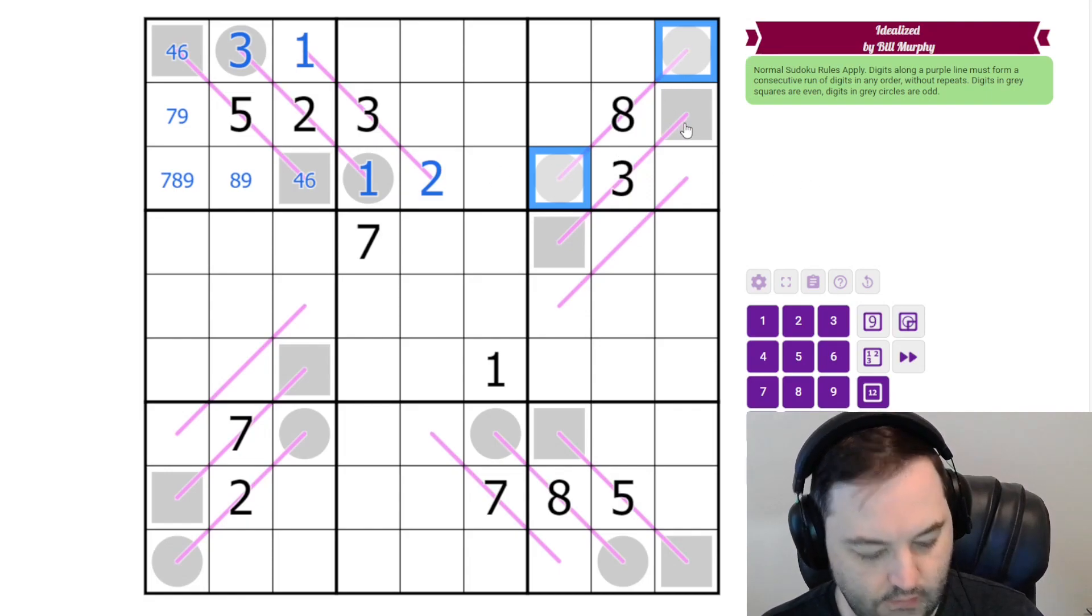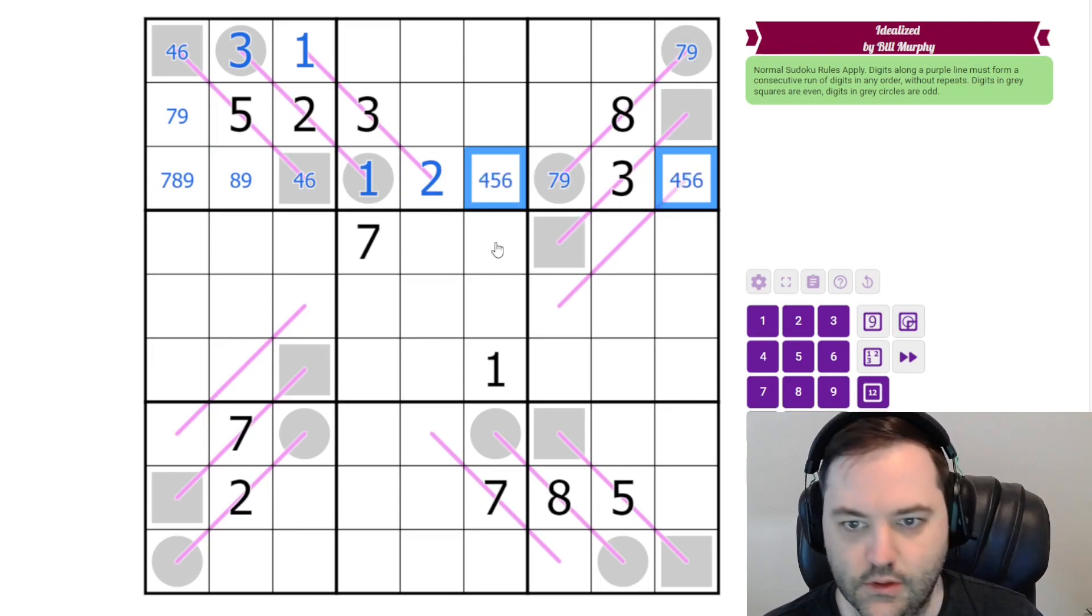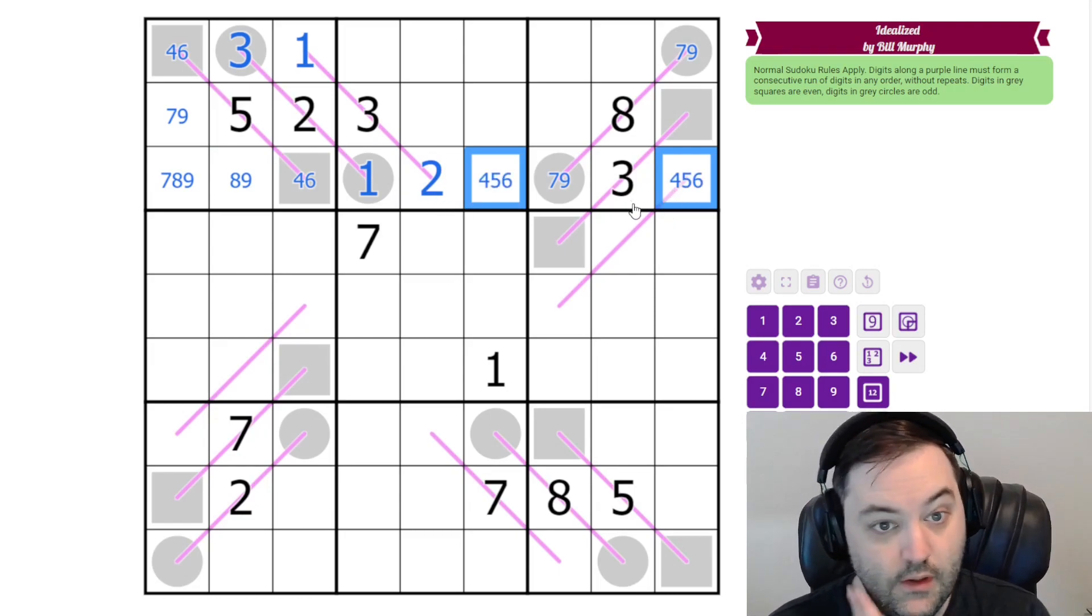All right. So either side of eight is seven and nine. These are both odd. And now we have a seven, eight, nine in the row. So our remaining digits are four, five, six. We'll just keep that in mind.